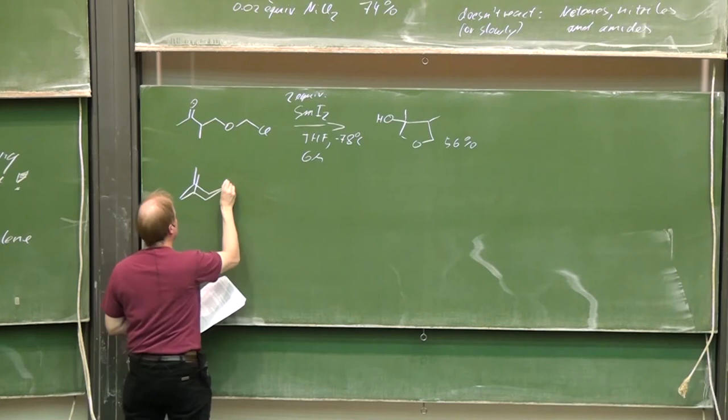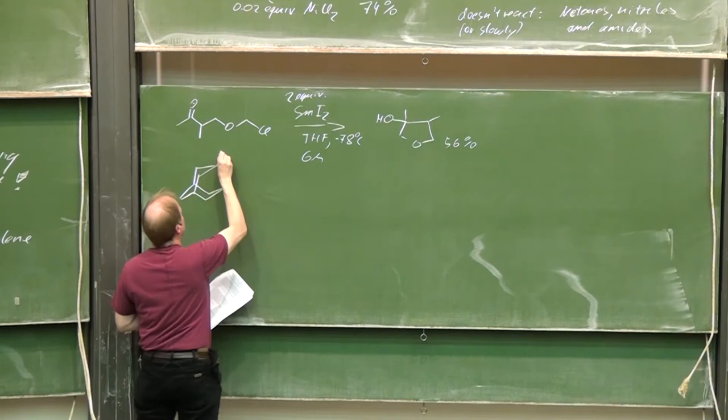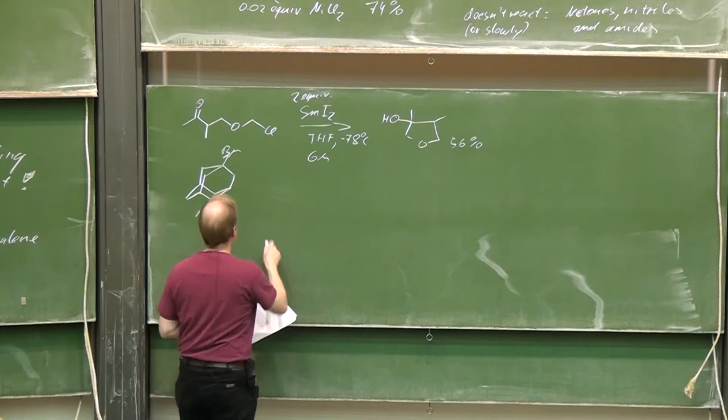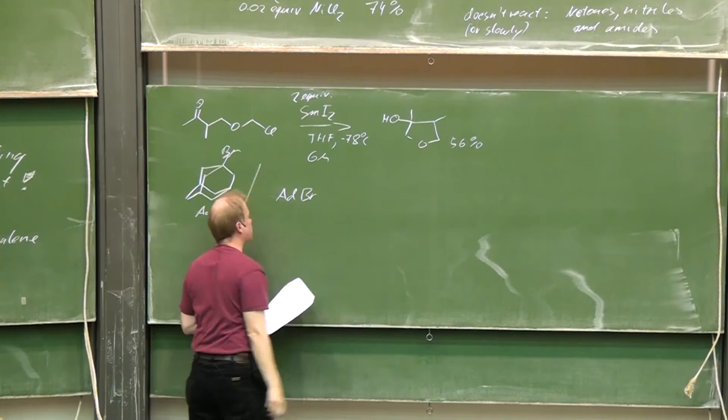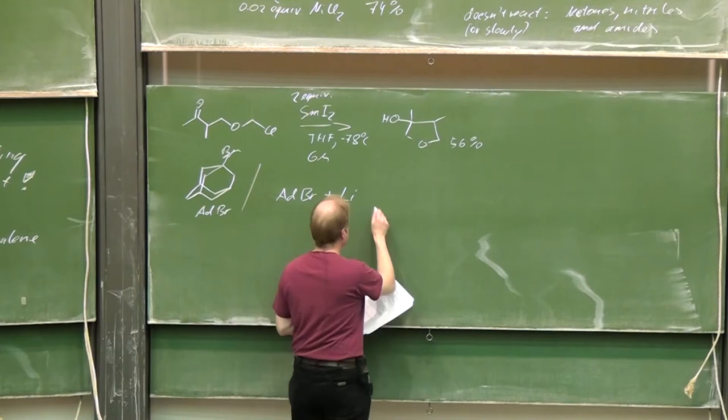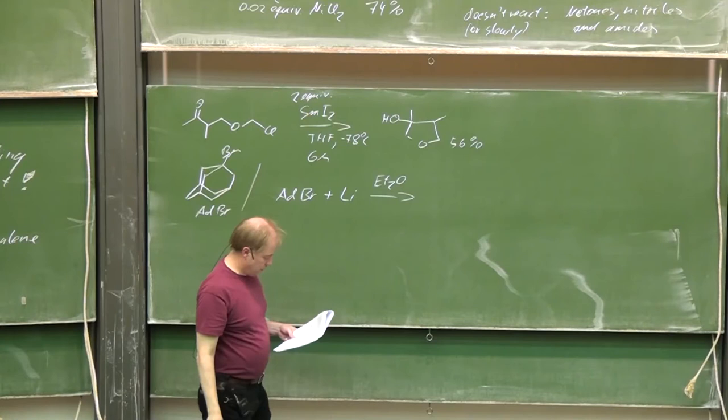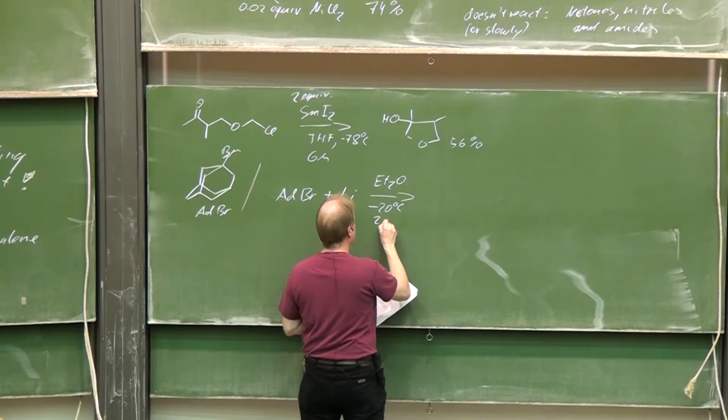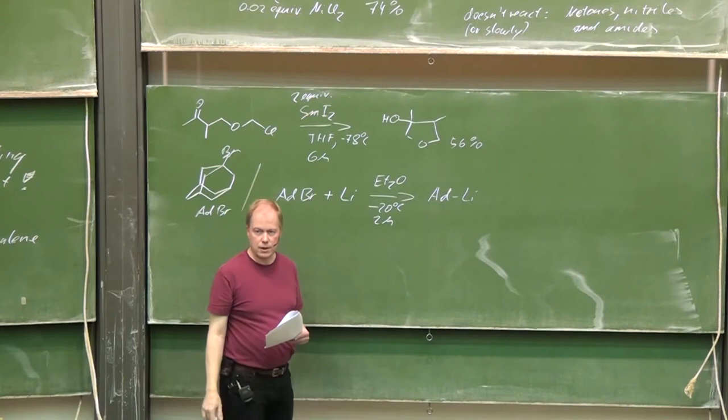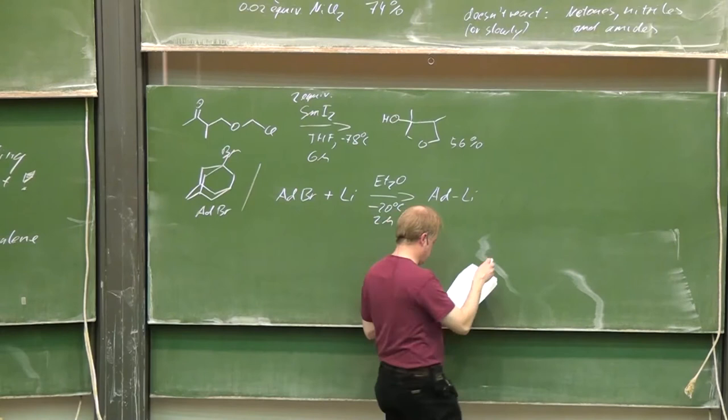You certainly know the adamantyl structure. This is adamantyl bromide. Two experiments: adamantyl bromide plus lithium metal, diethyl ether, minus 20 degrees, two hours reaction time, hopefully gave the lithiated adamantyl. That this worked was proven.